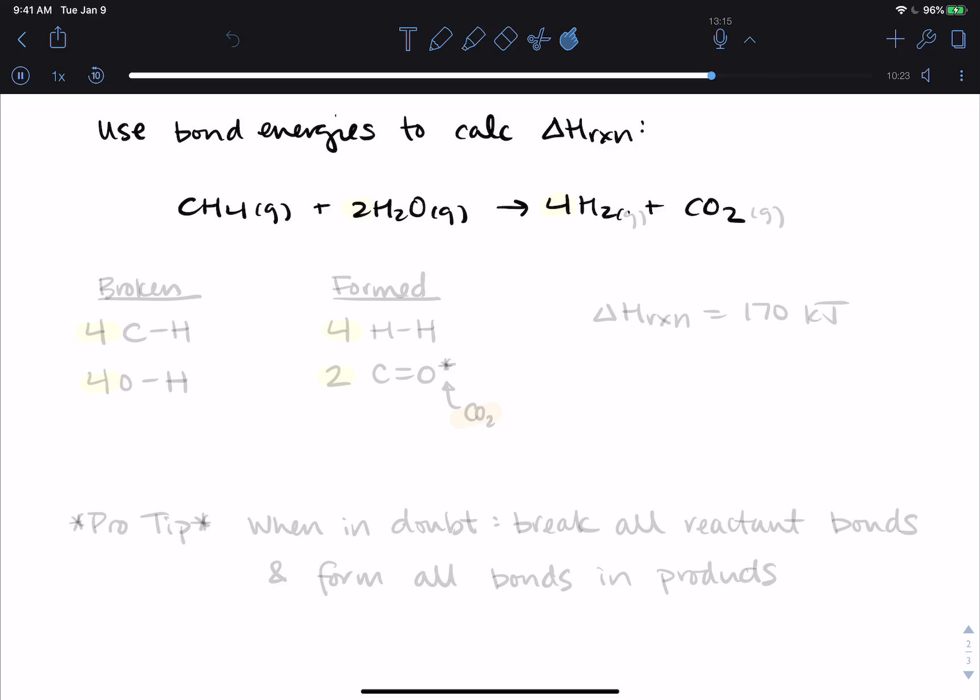All right. Oh, I need this label, this gas and gas. So what I'm going to tell you is that this is the place where you should pause the video and see if you can come up with this. You probably want to draw the Lewis structures and you want to make sure to read any table that you have very carefully when you pull values. So broken, you break four C-H bonds and four O-H bonds. You form four H-H bonds and two C double bond O. I'm going to put a star here because you form them in carbon dioxide. So you should be able to get a ΔH reaction of 170 kilojoules for this reaction.